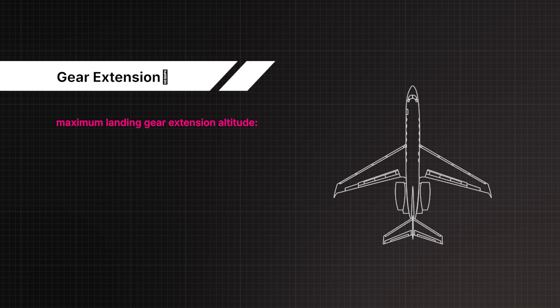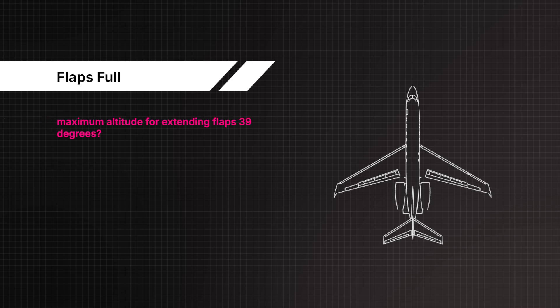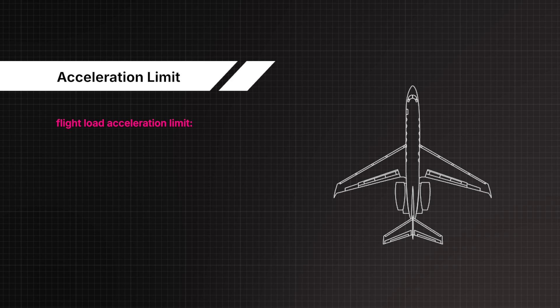Maximum landing gear extension altitude: 20,000 feet MSL. Maximum altitude for extending flaps 39 degrees: 20,000 feet MSL. Flight load acceleration limits: flaps up, 1 to plus 2.5 G's; flaps down, 0 to plus 2 G's.